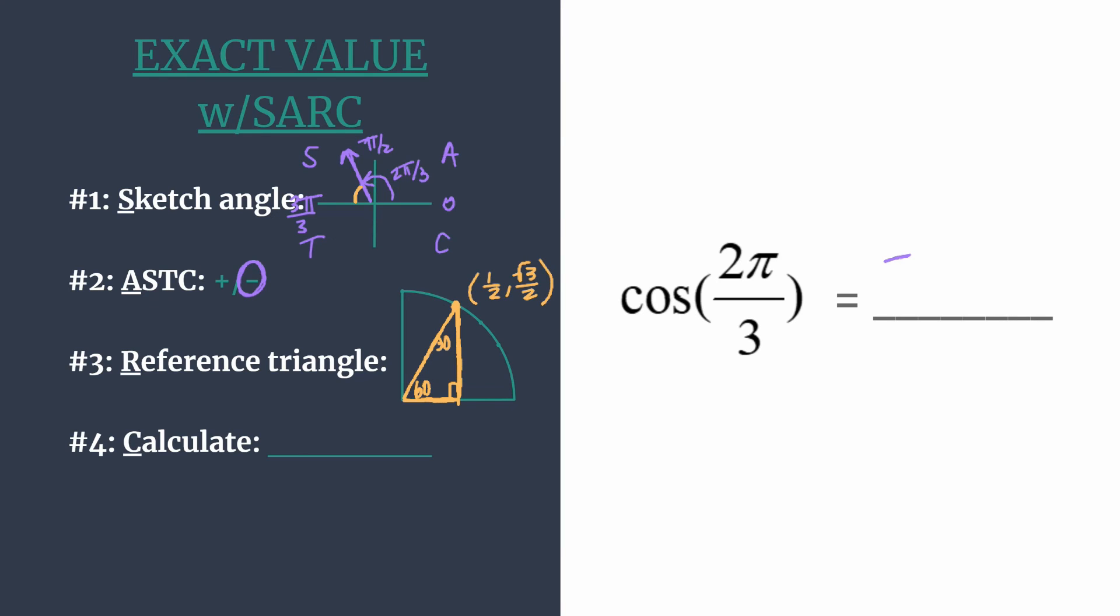Alright, so now we can calculate. We want the cosine, and we know on the unit circle the cosine of our angle is simply going to be the x-coordinate. Alright, so no calculation really needed.